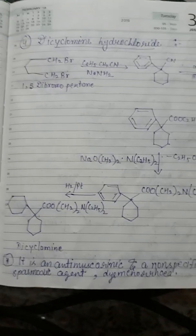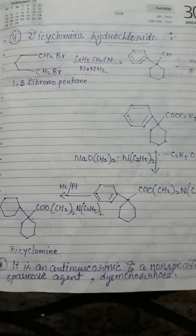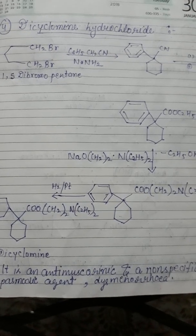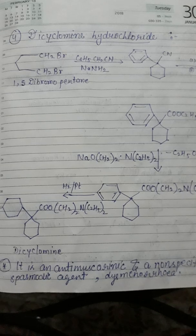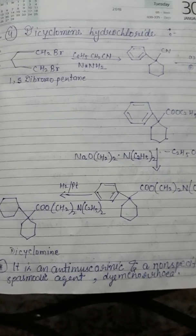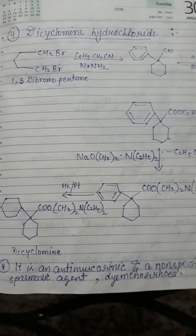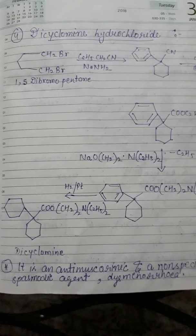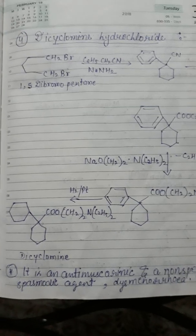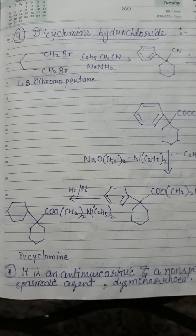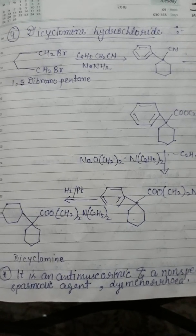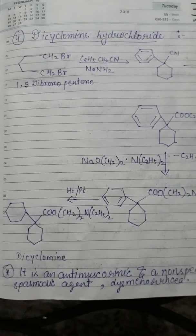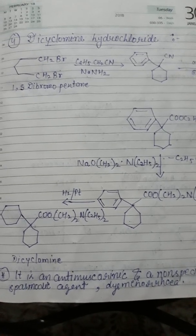Now we come to the synthesis of dicyclomine hydrochloride, a drug used in dysmenorrhea, pylorospasm, and biliary dysfunction. First, we should know its properties. Dicyclomine exists as a white crystalline powder with a bitter taste, soluble in water and chloroform. Dicyclomine hydrochloride behaves both as an anti-muscarinic and a non-specific antispasmodic agent, first introduced in 1950.